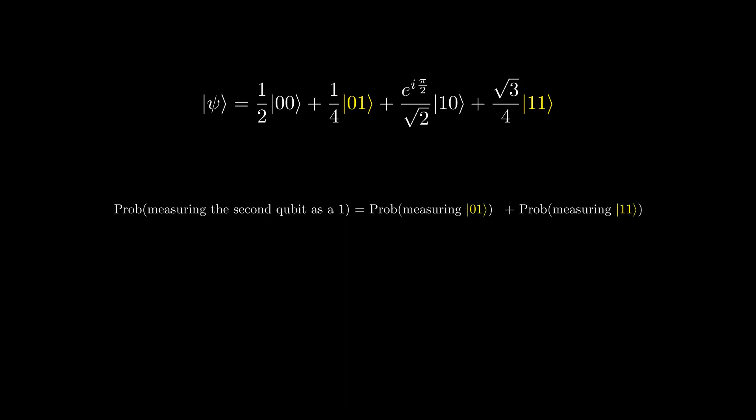Now that we have multiple qubits, how do we measure a single qubit? Let's say we have two qubits in this state, and we wanted to find the probability of measuring the second qubit as a 1. We do this by looking at all the superposition states where the second qubit is 1, then summing up the probabilities of measuring those states.